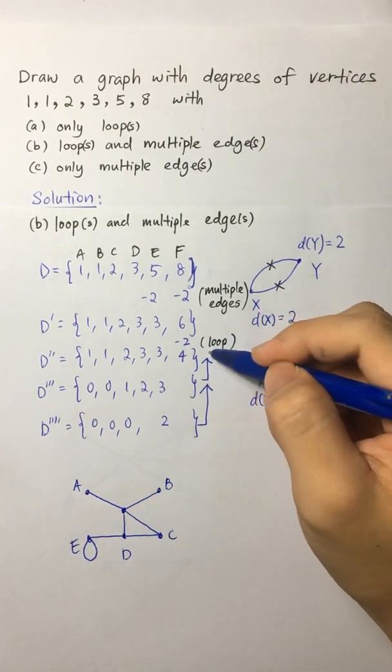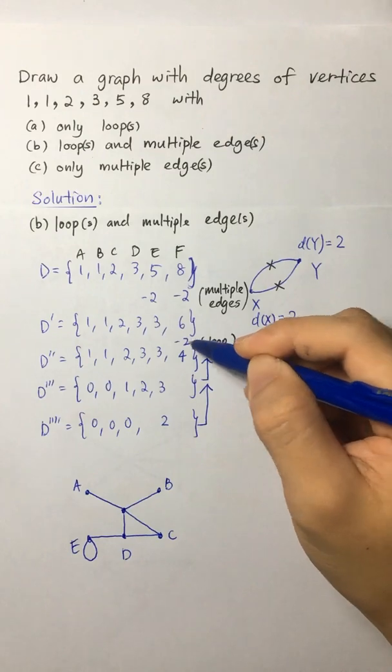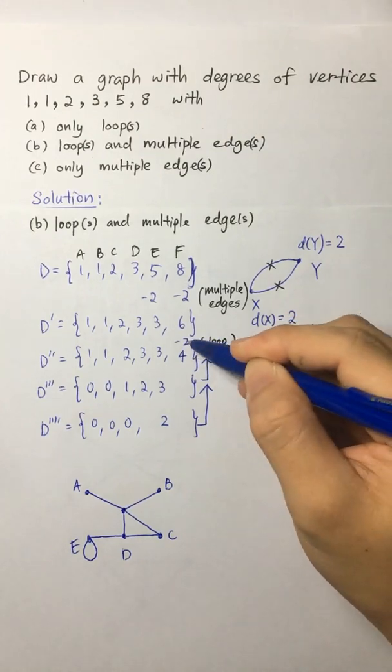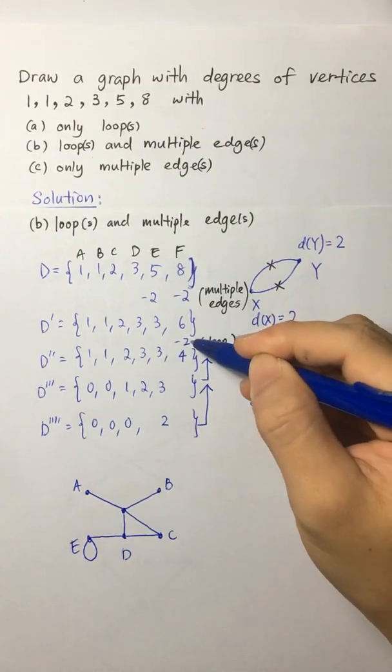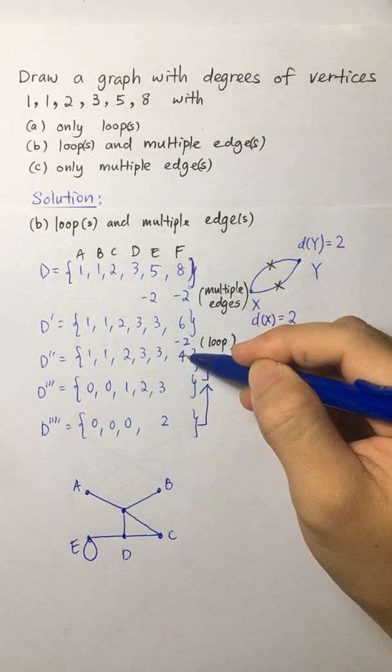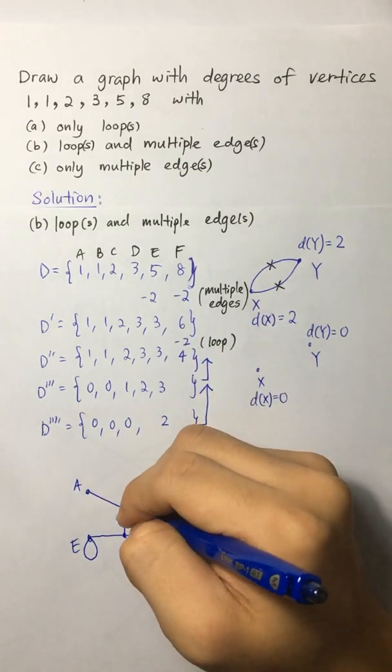And then keep reversing the process. Now we have to add a loop because we minus 2. That's the loop. So we have to add a loop to vertex F. So we can actually add a loop here.